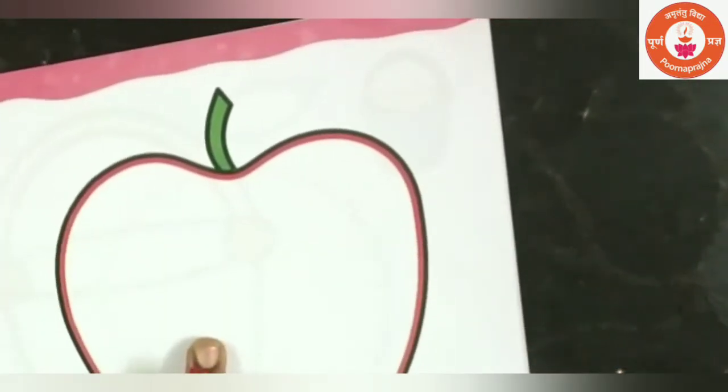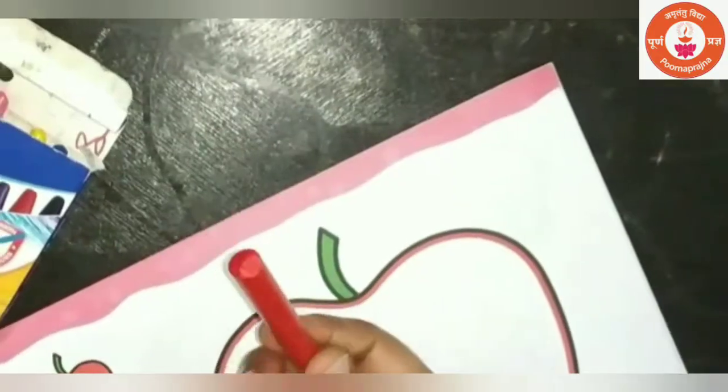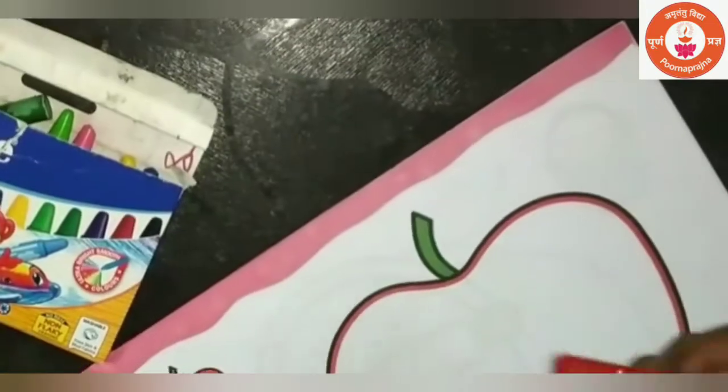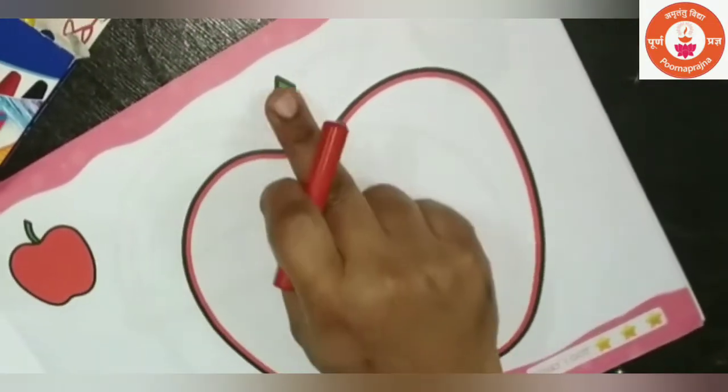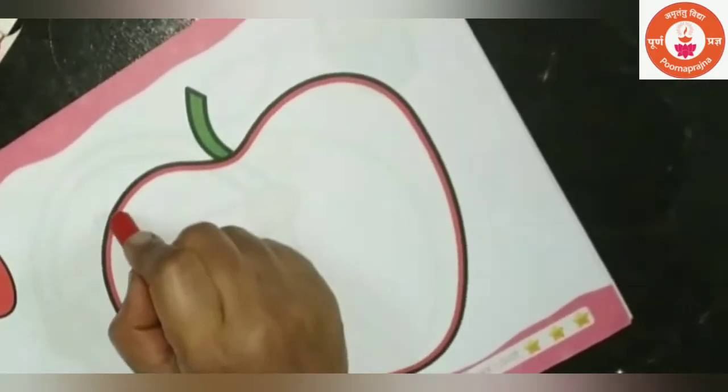Now we will color the apple. Color inside the apple, don't color outside the apple. Take red color crayon and start coloring. See here, this is green, already they have colored. Now you need to color only the apple.